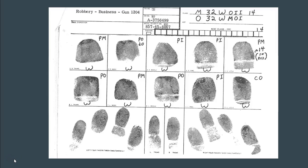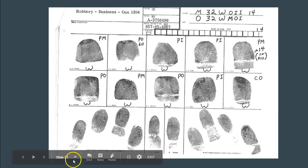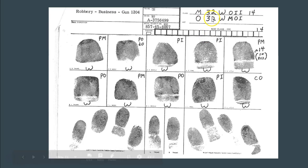In our last video, we talked about in the Henry system of classification how to do the first step, which is to determine the primary. The primary dealt with figuring out where the whorls in our 10 fingerprints come from. The primary is the first step in Henry, and it's going to be recorded in the third position in the Henry classification.